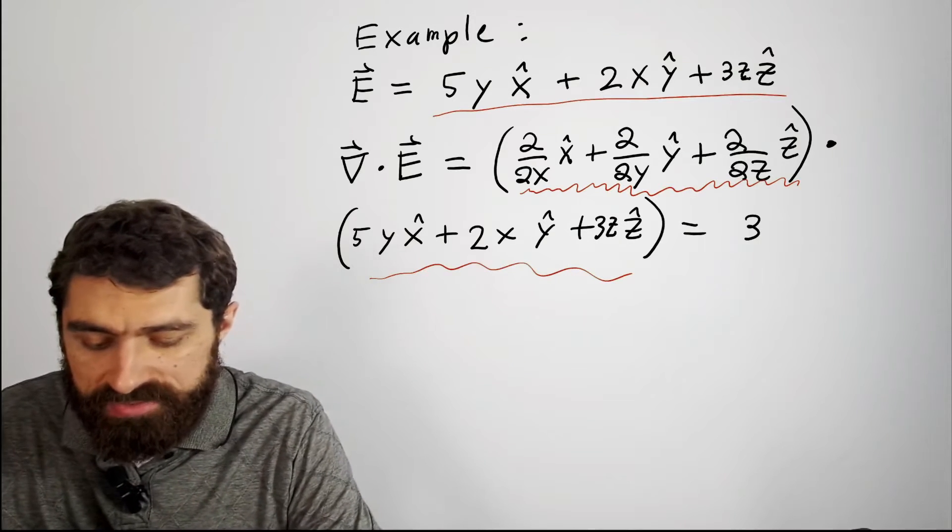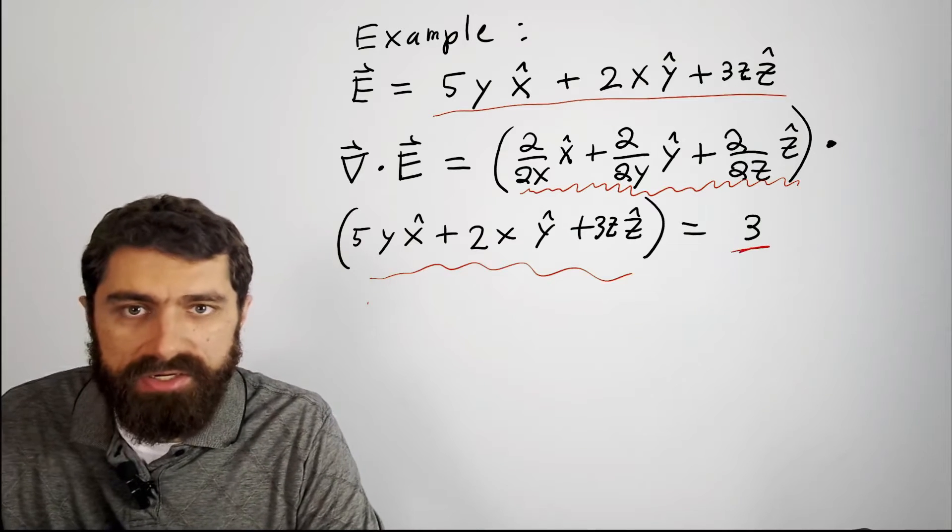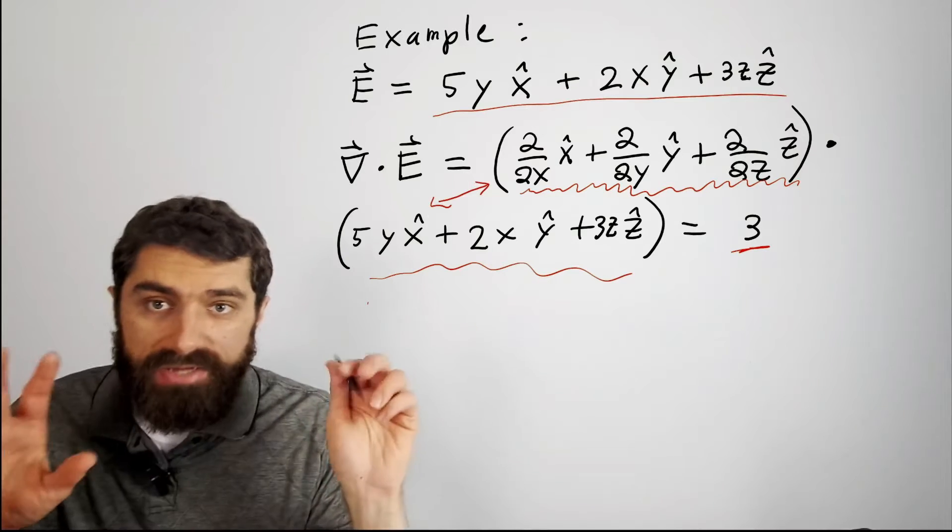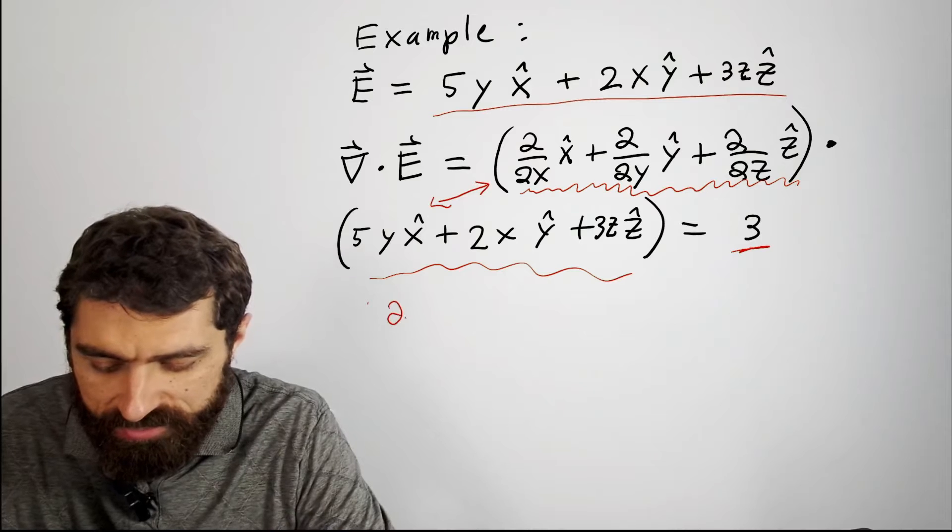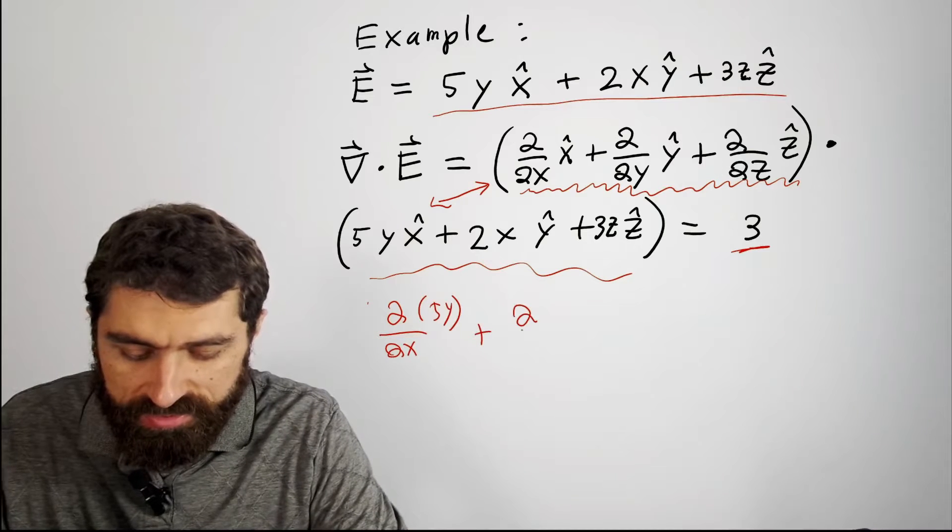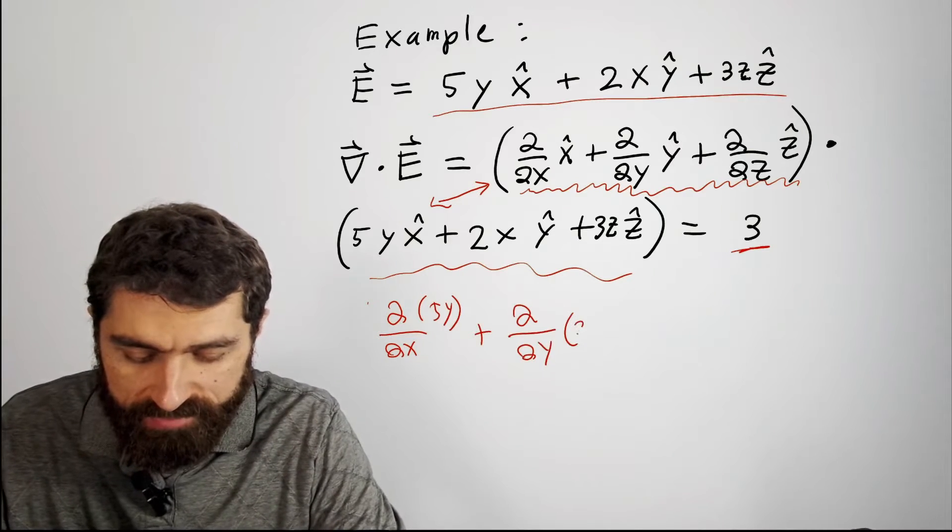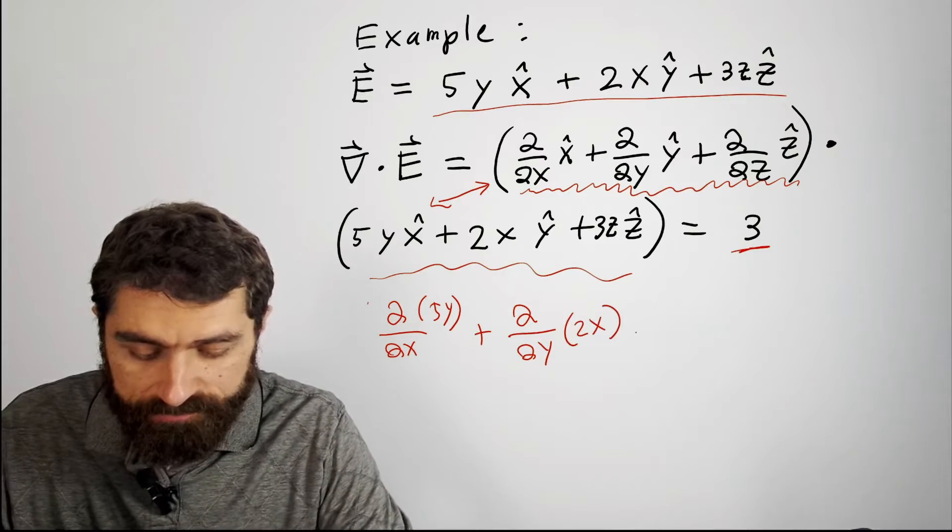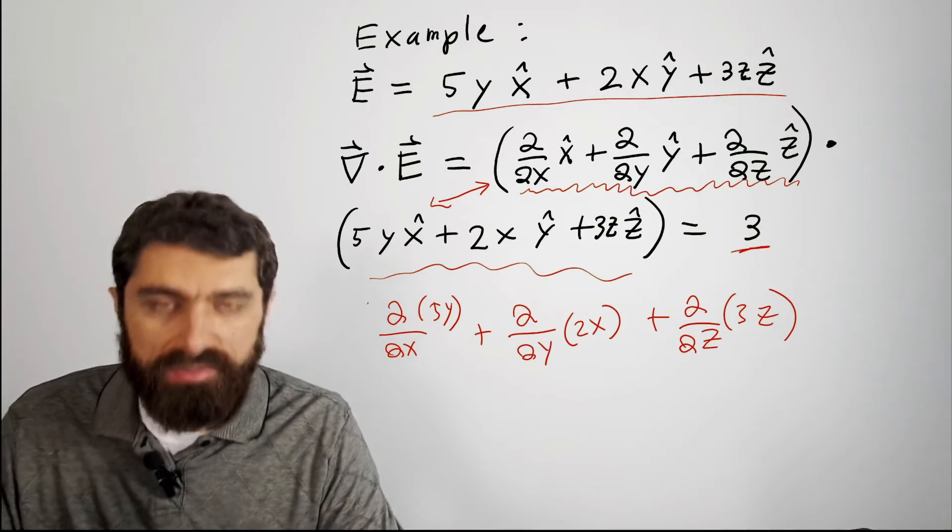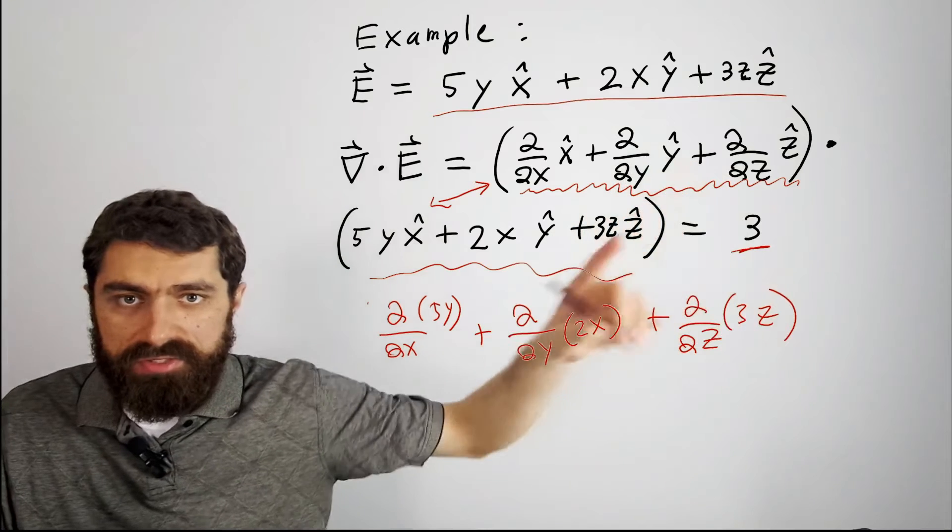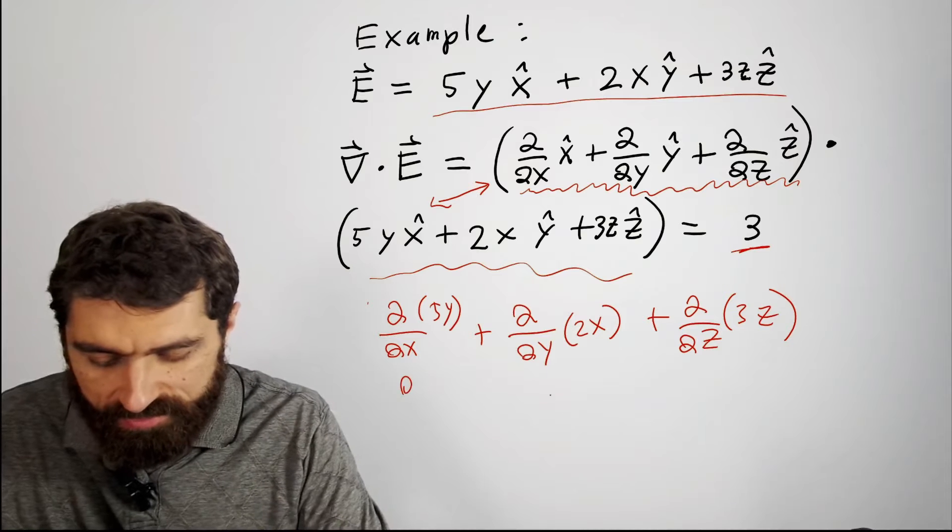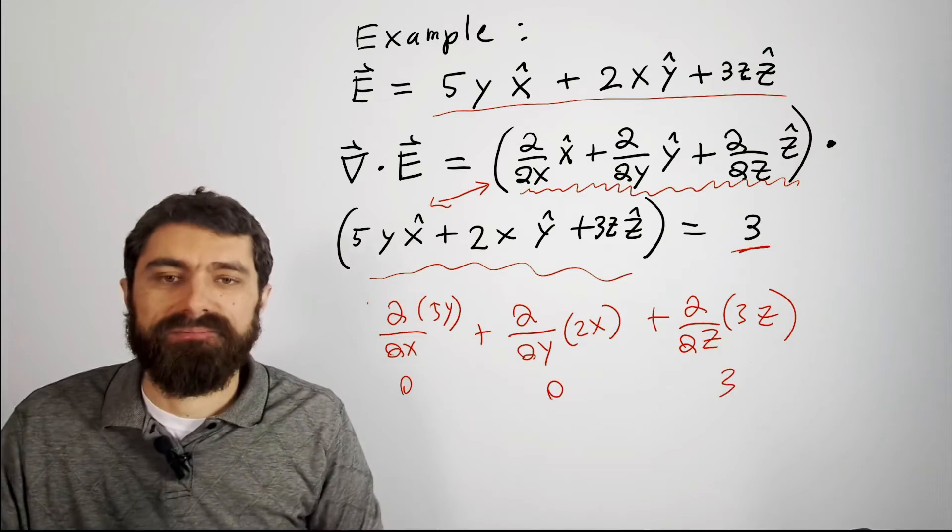So you'd have, basically, this ends up being three here. And the reason is because you multiply out their components. You do partial over partial x of 5y, right? And that's plus partial over partial y of 2x. So basically, it's like you're doing a dot product with unit vectors. And so then you can see here that this is zero, this is zero, this is three. So that's how we got that number.